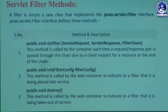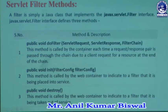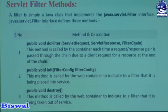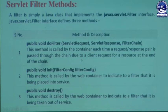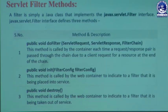The first method is public void doFilter(), with a capital F. This method contains three parameters: ServletRequest, ServletResponse, and FilterChain. This method is called by the container each time a request or response pair is passed through the chain due to a client request for a resource. It helps gather information about the servlet request and response. If this method is not invoked, we get an error.